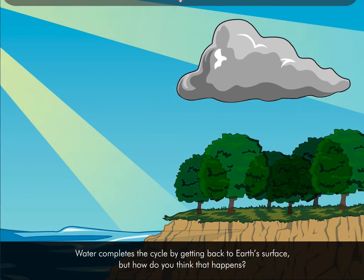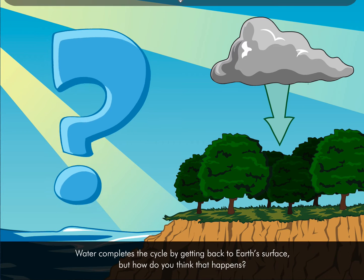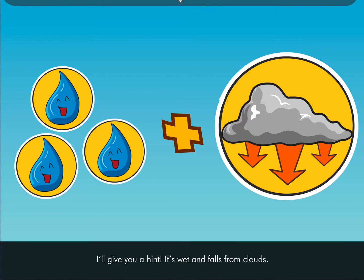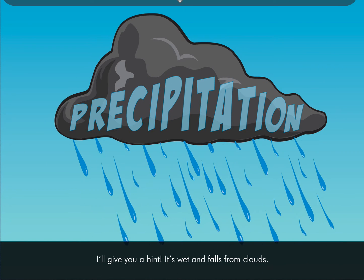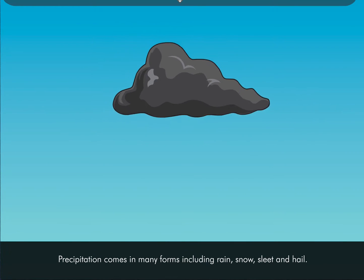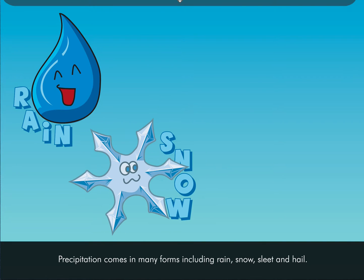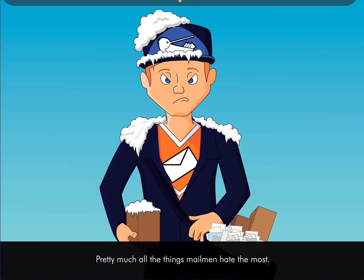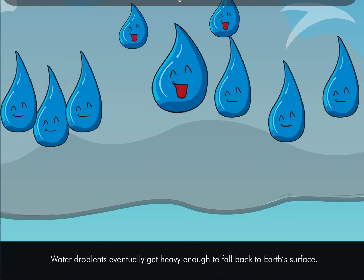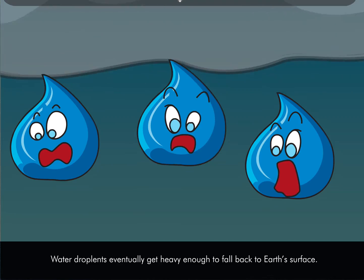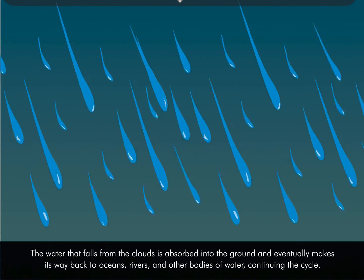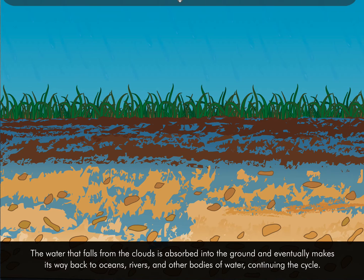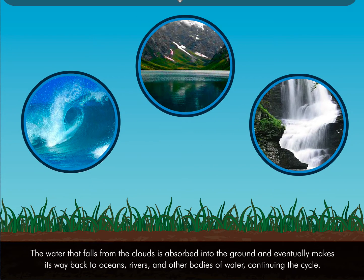Water completes its cycle by returning to Earth's surface through precipitation. Precipitation comes in many forms, including rain, snow, sleet, and hail — pretty much all the things mailmen hate the most. Water droplets eventually get heavy enough to fall back down to Earth's surface. The water that falls from clouds is absorbed into the ground and eventually makes its way back to oceans, rivers, and other bodies of water, continuing the cycle.